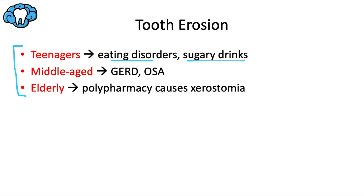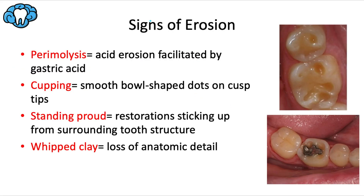High consumption of sugary drinks like sodas and sports drinks is especially common among teenagers involved in sports. Middle-aged people are at higher risk of GERD or acid reflux, which can result in tooth erosion, and are also more at risk for obstructive sleep apnea (OSA), a comorbidity for tooth erosion. The elderly are more likely taking many different medications — known as polypharmacy — which is a risk factor for xerostomia, reducing buffering capacity of saliva and increasing erosion risk.